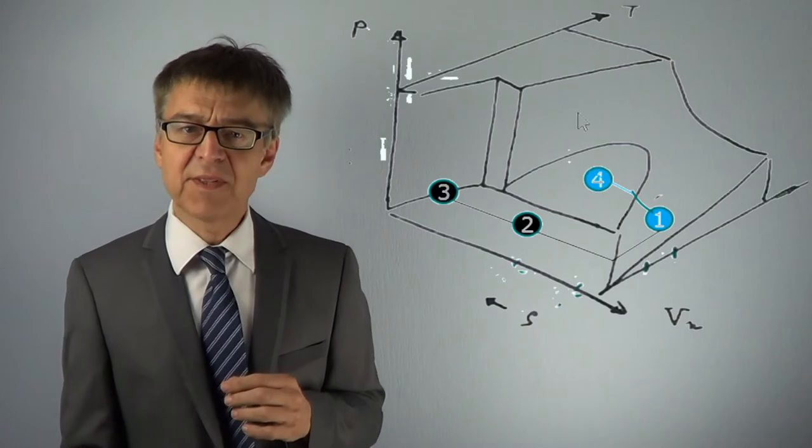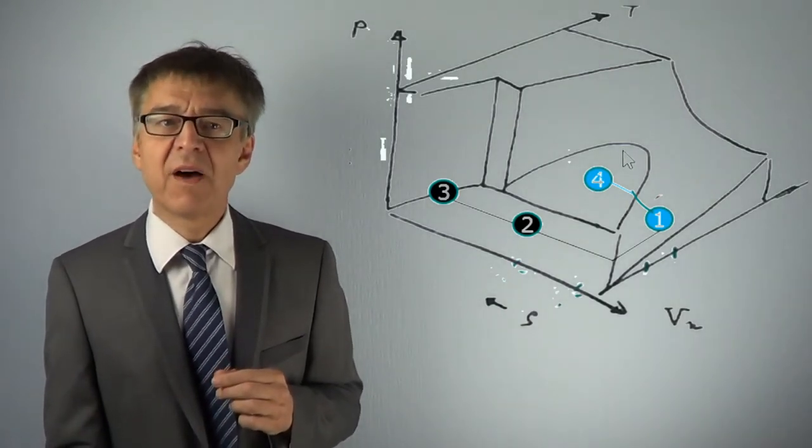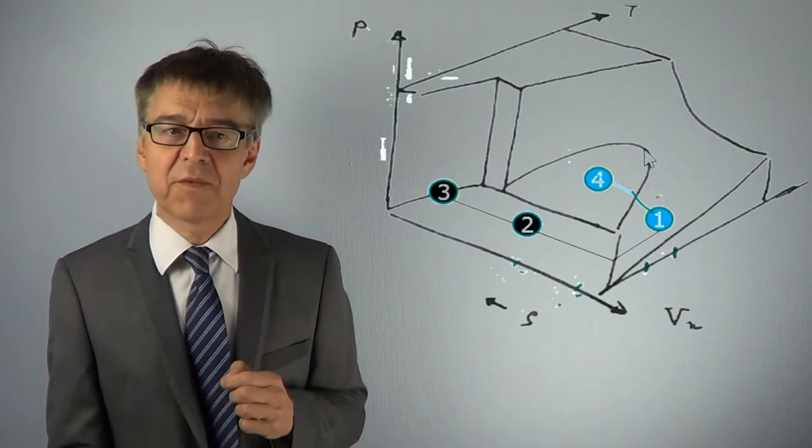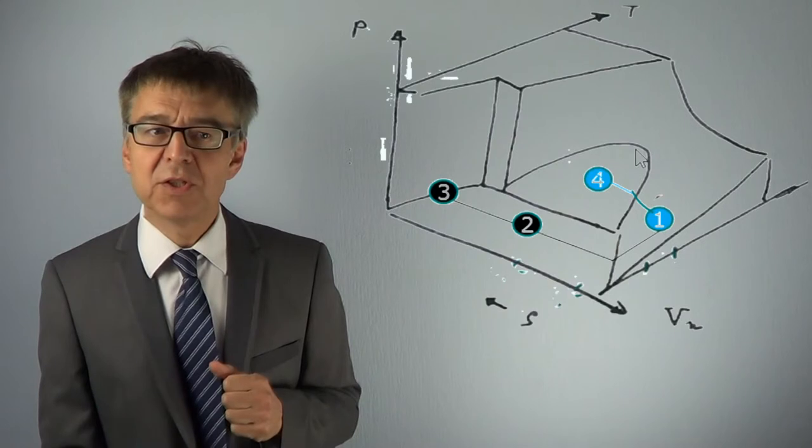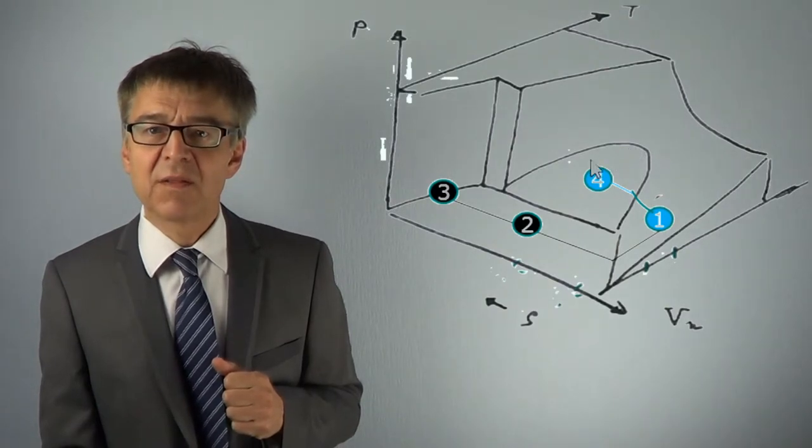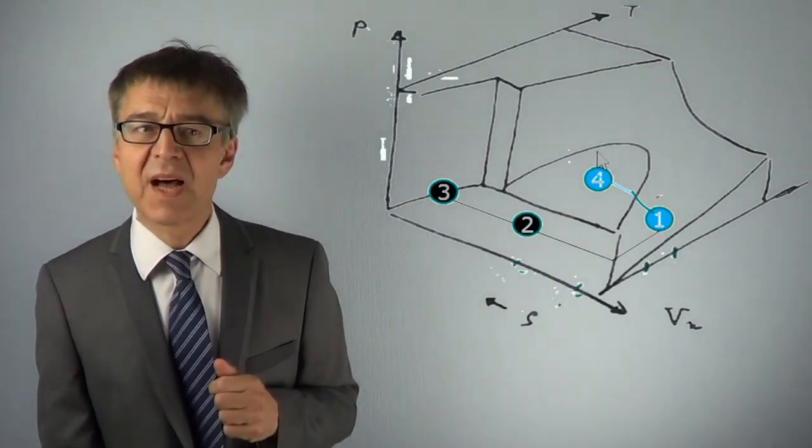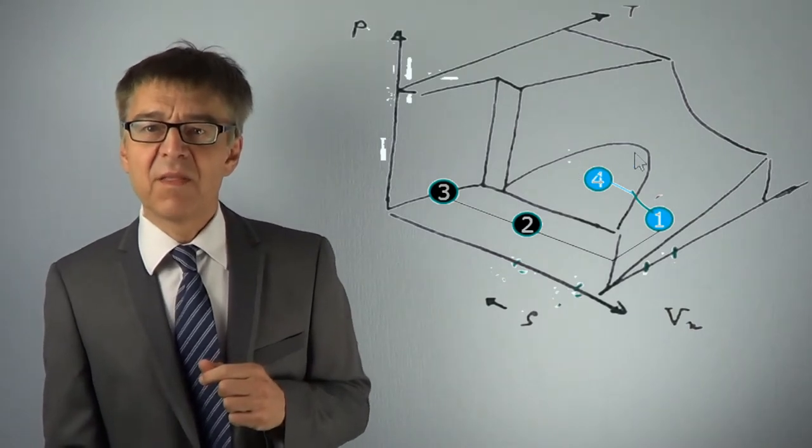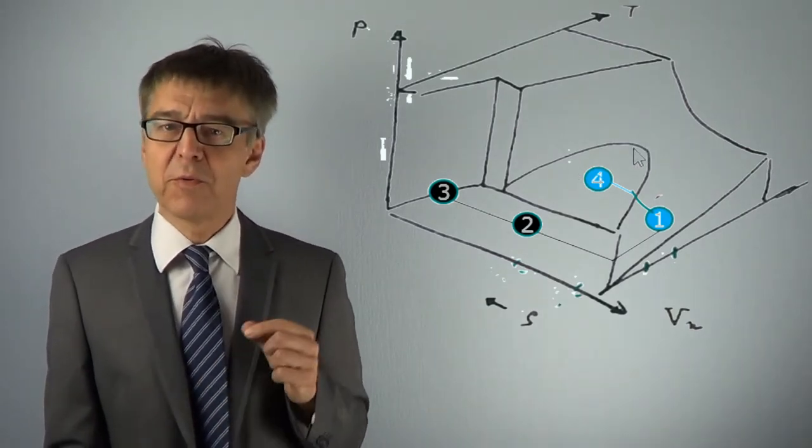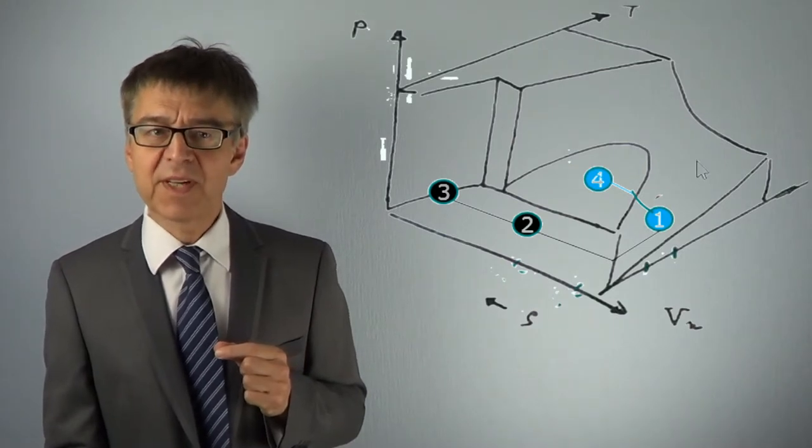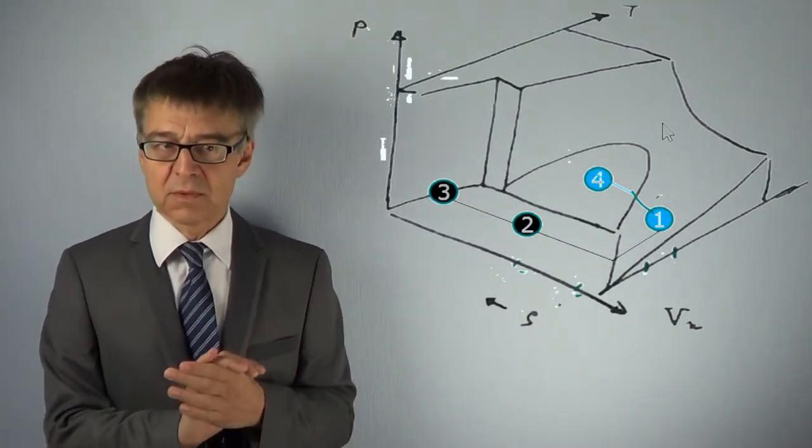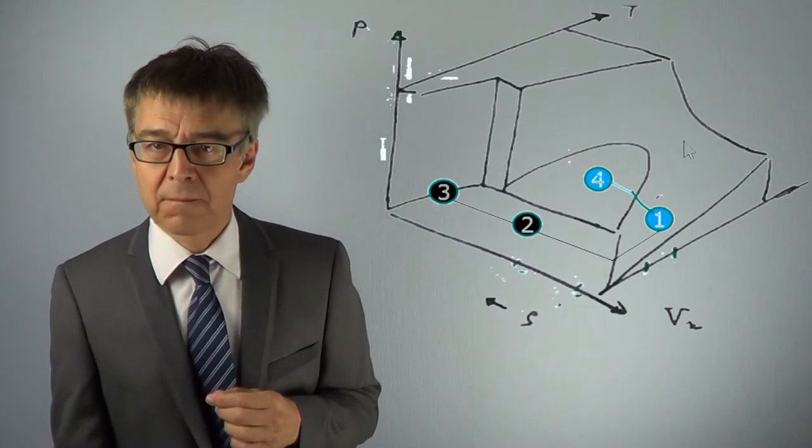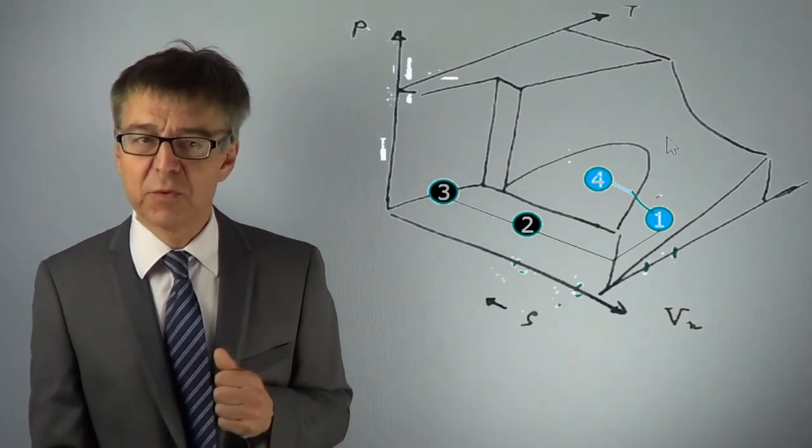Another characteristic feature in the graph is the maximum of the binodal curve of the liquid gas region. It looks like an inverted or upside-down parabola. This maximum is called the critical point. Above the critical point, gas and liquid are indistinguishable. The states are now called supercritical fluids.